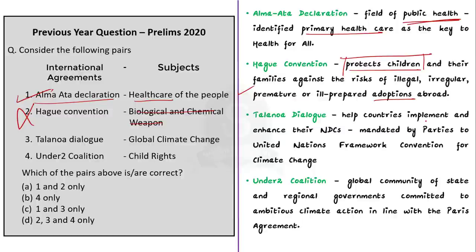The third pair is the Talanoa Dialogue — Global Climate Change. This dialogue is a process designed to help countries implement and enhance their nationally determined contributions by 2022. It was mandated by the parties to the UNFCCC to review collective global efforts to reduce greenhouse gas emissions, in line with the goals of the Paris Agreement. The subject given is global climate change, so this is a correct pair.